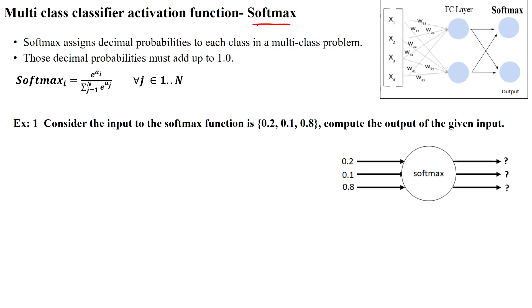In the convolutional neural network, the output of the fully connected layer is given to the softmax classifier for multi-class classification. The multi-class classifier produces decimal probabilities for each and every class, and the sum of all those decimal probabilities will be one.